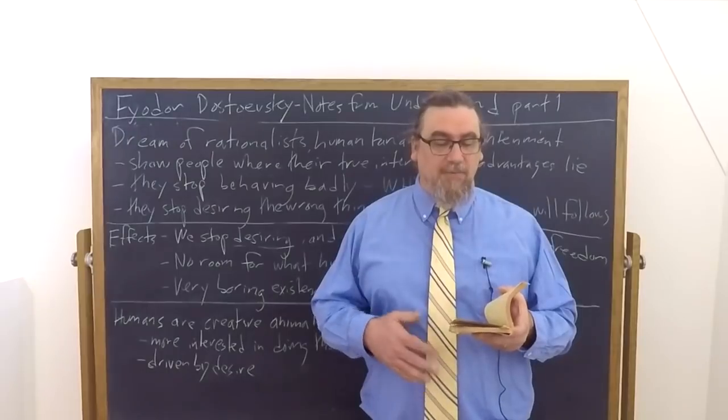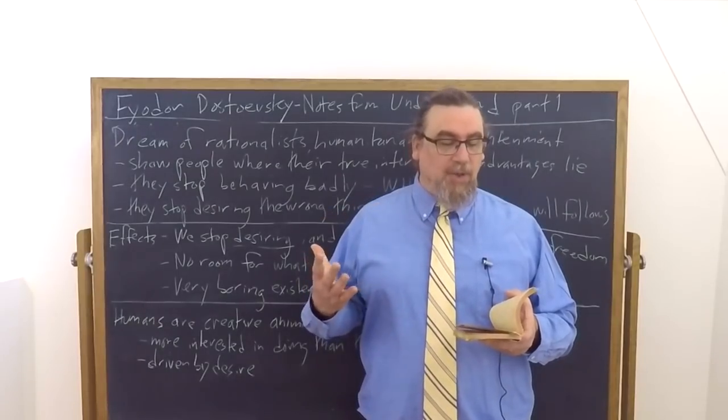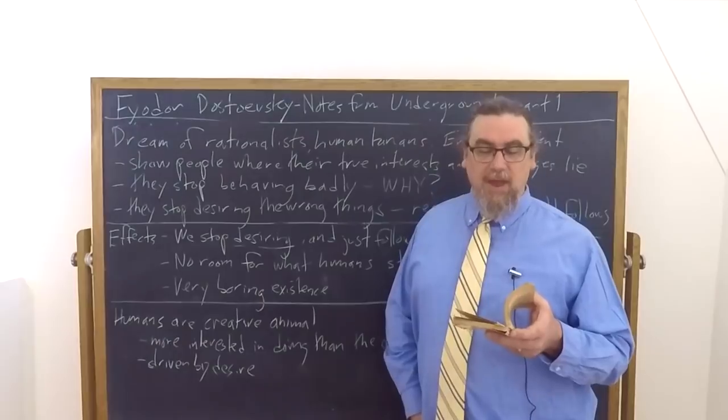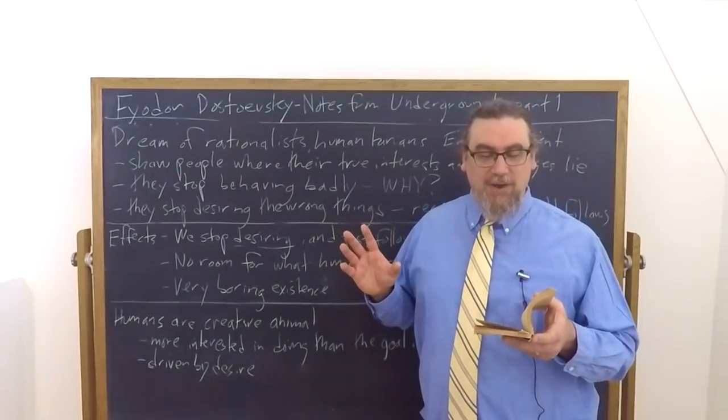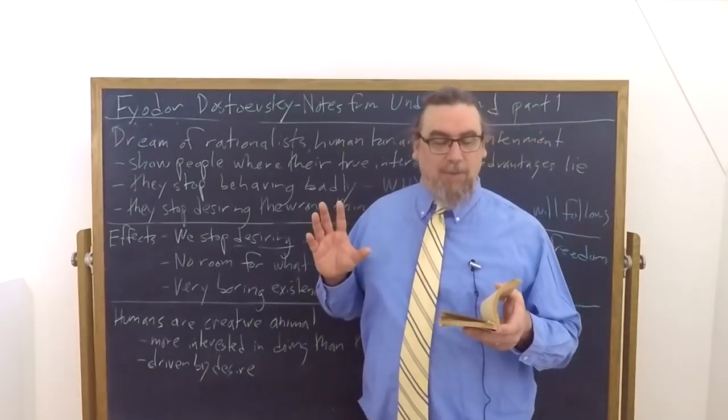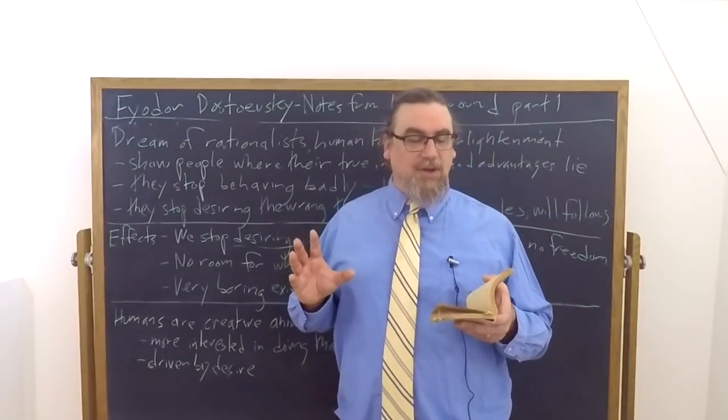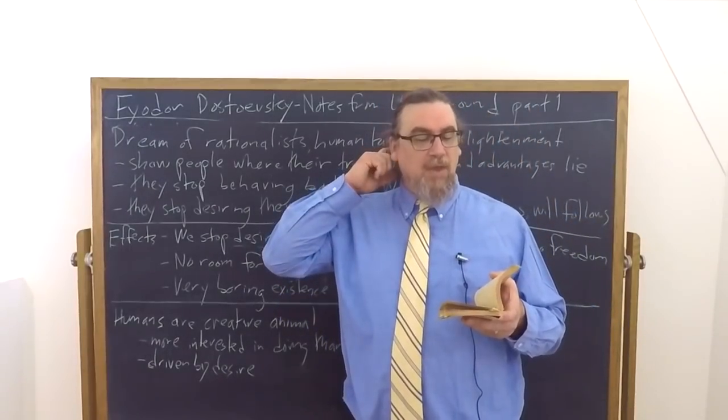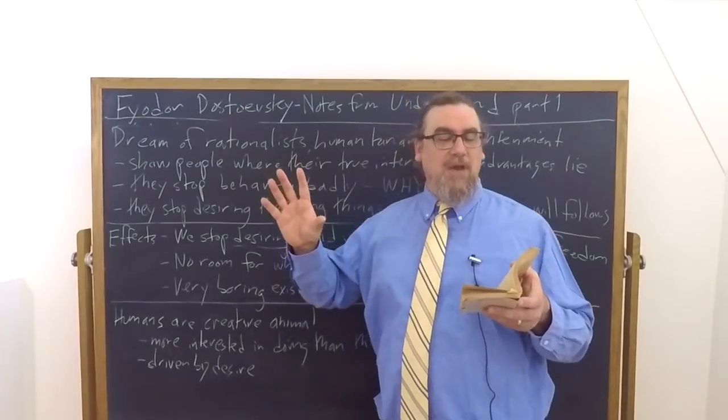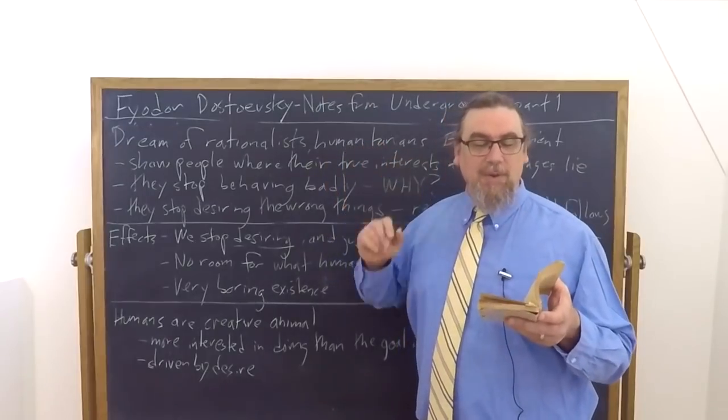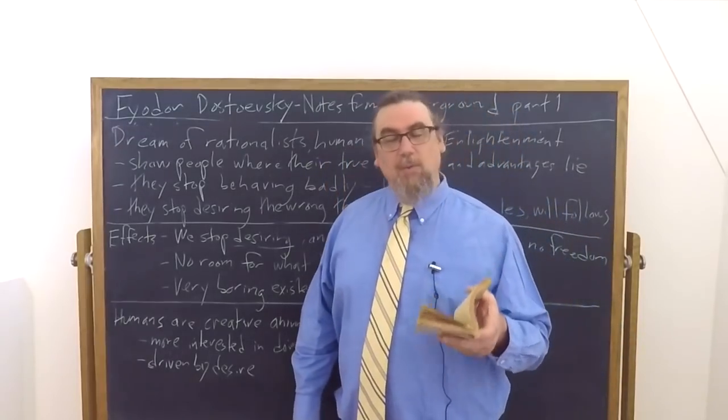Life will be really easy for him then. All human acts will be listed in something like logarithm tables, say up to the number 108,000 and transferred into a timetable. Or better still, catalogs will appear designed to help us in the way our dictionaries and encyclopedias do. They will carry detailed calculations and exact forecasts of everything to come so that no adventure and no action will remain possible in the world.